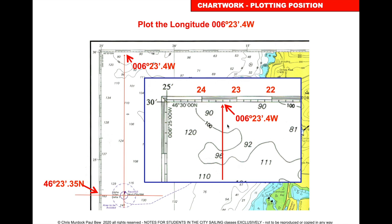Now go to the top of the chart for the longitude scale. Starting at 6 degrees, count across: 22, 23, then 0.2, 0.4 — mark off 23.4 minutes west and draw a line straight down.